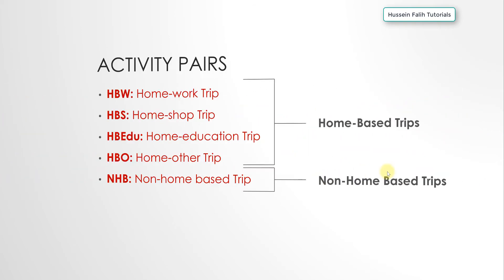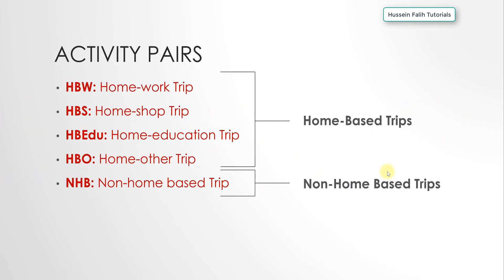Activity pairs are two successive activities in the daily routine of a person. We have home-based trips and non-home-based trips. Home-based trips start and end at home — examples include home-to-work, home-to-shop, home-to-education, and home-to-other trips. Non-home-based trips do not start or end at home.